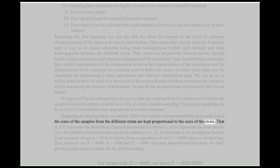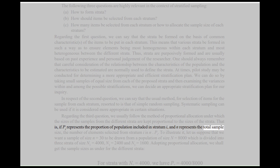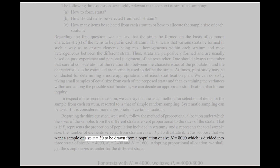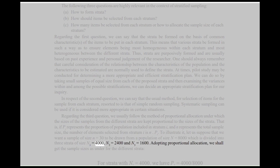Regarding the third question, we usually follow the method of proportional allocation, under which the sizes of the samples from the different strata are kept proportional to the sizes of the strata. That is, if pi represents the proportion of population included in stratum i and n represents total sample size, the number of elements selected from stratum i is n × pi. To illustrate, suppose we want a sample of size n = 30 from a population of size N = 8,000, which is divided into 3 strata of sizes N1 = 4,000, N2 = 2,400, and N3 = 1,600. Adopting proportional allocation, we determine the sample sizes for each stratum.